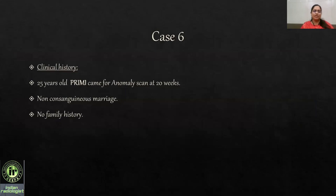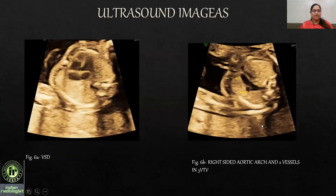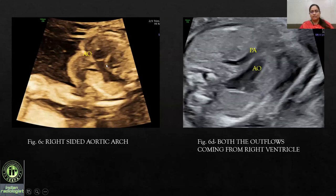Case 6: A 25-year-old came for an anomaly scan at 20 weeks. Non-consanguineous marriage, no significant family history. Examination of the heart showed left axis deviation with a 2.2 mm perimembranous VSD. The aorta and pulmonary artery were both seen arising from the right ventricle, with the pulmonary artery appearing narrow compared to the aorta. Three-vessel trachea view showed only two vessels, and the thymus was absent. The aorta crossed on the right side of the trachea, indicating a right-sided aortic arch. This was a complex cardiac case of DORV with atretic pulmonary artery and right-sided aortic arch.